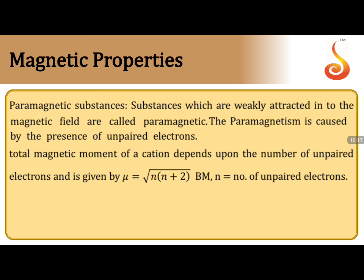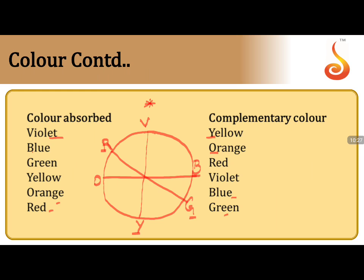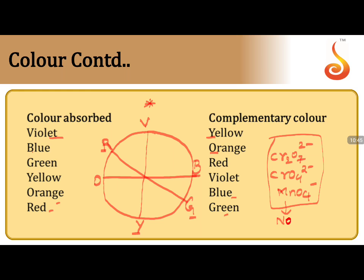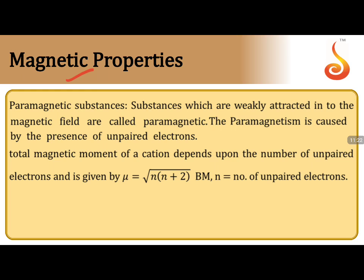An important exception in color: species like Cr₂O₇²⁻ (dichromate), CrO₄²⁻ (chromate), and MnO₄⁻ (permanganate) have no unpaired electrons in their valence shell, yet they exhibit color. The reason is charge transfer phenomena — not d-d transitions. This is a very important point: dichromate, chromate, and permanganate exhibit color due to charge transfer phenomena despite having no unpaired electrons.